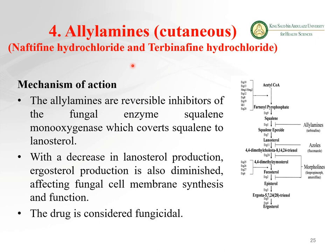Allylamines are the next class of fungal cell membrane synthesis inhibitors. Their mechanism: allylamines inhibit the conversion of squalene to lanosterol by inhibiting the enzyme squalene monooxygenase. With decreased lanosterol production, ergosterol production is also diminished, affecting fungal cell membrane synthesis and function. These drugs are considered fungicidal — they can kill fungal cells.